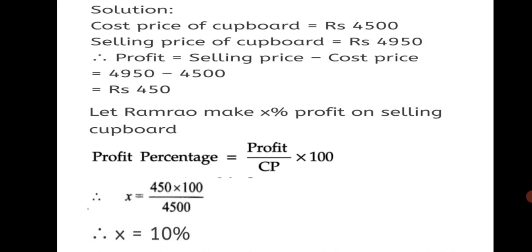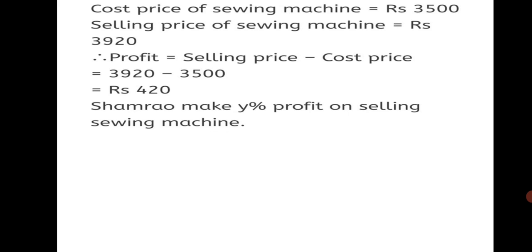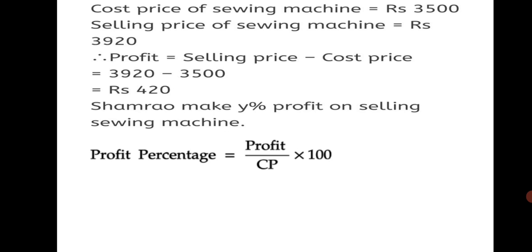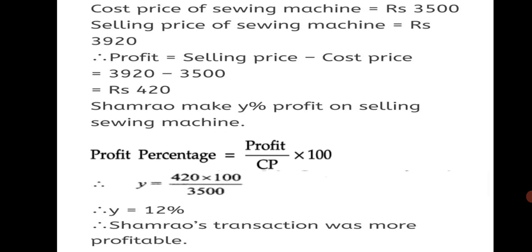Now let's see Sham Rao's profit. Cost price of sewing machine = Rs. 3,500 and Selling price = Rs. 3,920. Profit = 3,920 − 3,500 = Rs. 420. Let Sham Rao make Y percent profit on selling sewing machine. Profit% = (Profit / CP) × 100, so Y = (420 / 3,500) × 100 = 12%. Ram Rao's profit was 10% and Sham Rao's is 12%, so Sham Rao's transaction was more profitable.